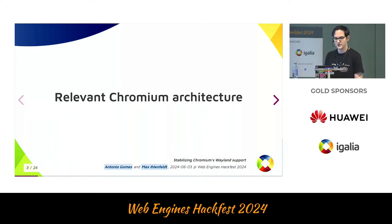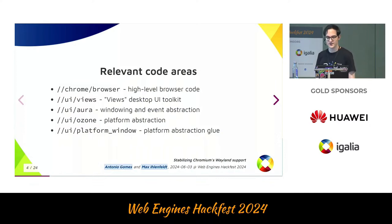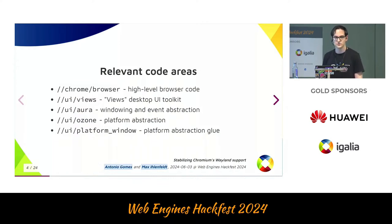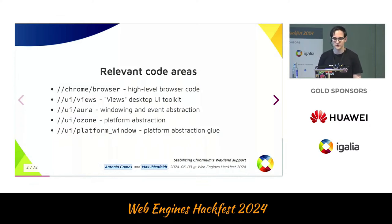Let's start with the architecture. I've included the paths if you are interested and want to take a look at the code yourself. Going from high level to more low level: the highest level is Chrome slash browser with all the high-level browser code, which is using the Views desktop UI toolkit. Views does all the rendering, layout, and event handling, and has most of the UI element definitions the browser uses. On Windows and Linux, Views is using the Aura framework for windowing and event abstraction — basically a platform-independent replacement for GDI or GTK. On Linux, Aura is using Ozone as one final layer of platform abstraction, with some glue in UI slash platform window between Aura and Ozone.